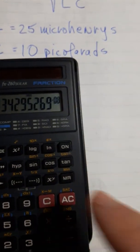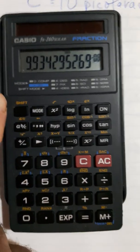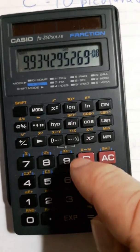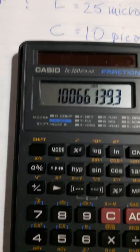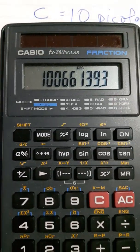So 1 over is this button here, and a shift, the second function there. Shift, 1 over, and we get that big number there.